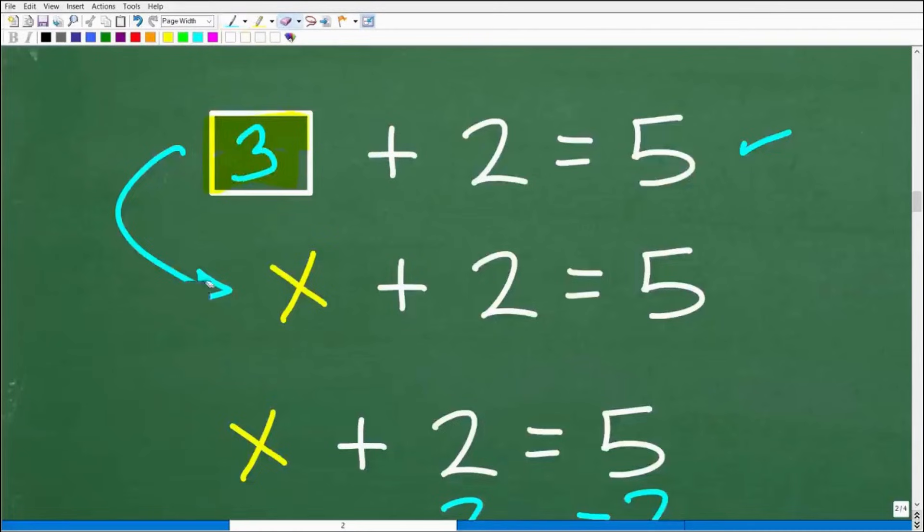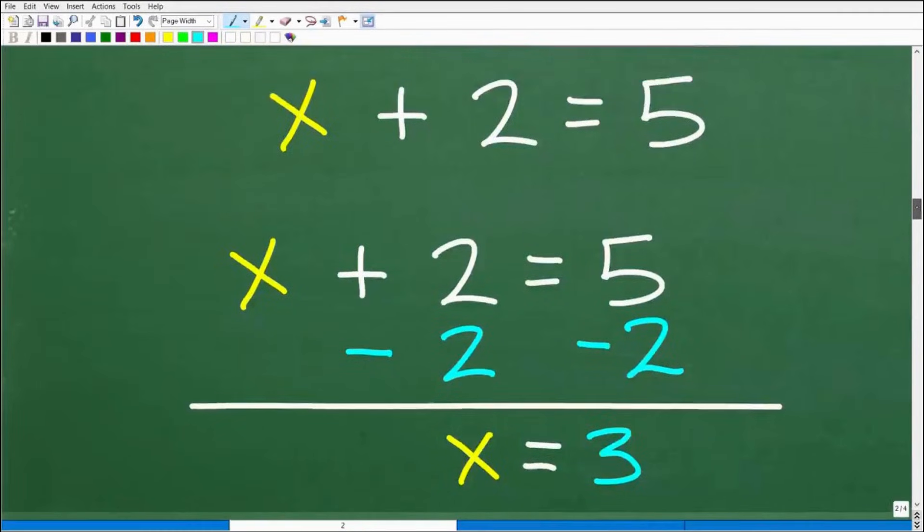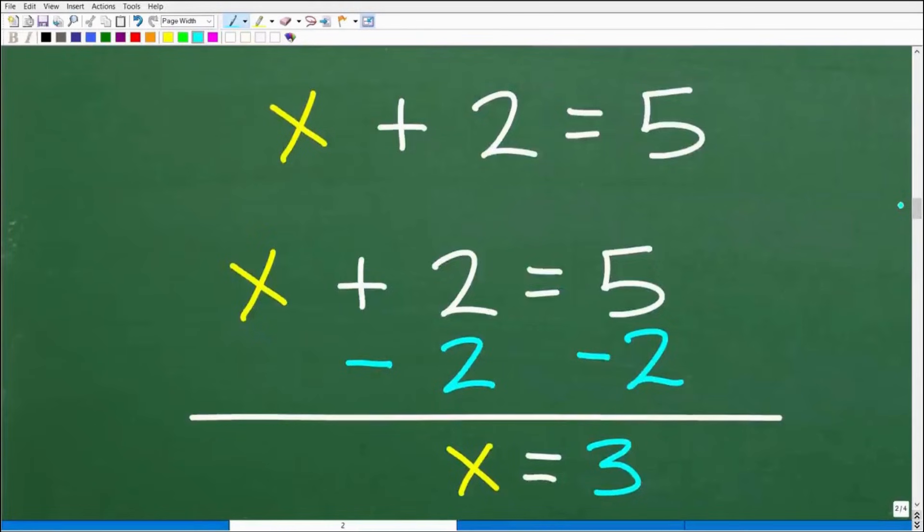But in algebra, what you learn how to do is you learn how to solve equations step-by-step. And there's all different sorts of equations. I like to call it the golden rule of algebra, which is whatever you do to one side of an equation, as long as you do it to the other side of an equation, you are perfectly fine. So the objective is to figure out what X is or what X is equal to. Here I have X+2=5. I don't want X+2, I want X by itself. So what I can do is subtract a 2 away from this 2 right here. So I have a positive 2. If I take away a 2, that's 0. But whatever I do to this side of the equation, I have to do the exact same thing on the other side.